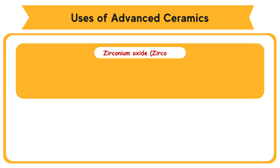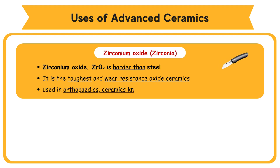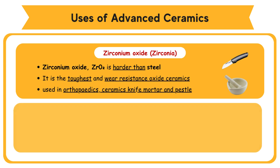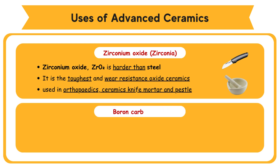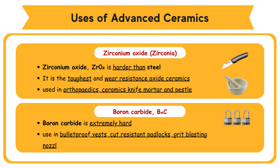Zirconium oxide, ZrO₂, is harder than steel. It is the toughest and most wear-resistant oxide ceramic, used in orthopedics, ceramic knives, mortars, and pestles. Boron carbide, B₄C, is extremely hard. It is a suitable material for use in bulletproof vests, cut-resistant padlocks, grit blasting nozzles, and ball bearings.